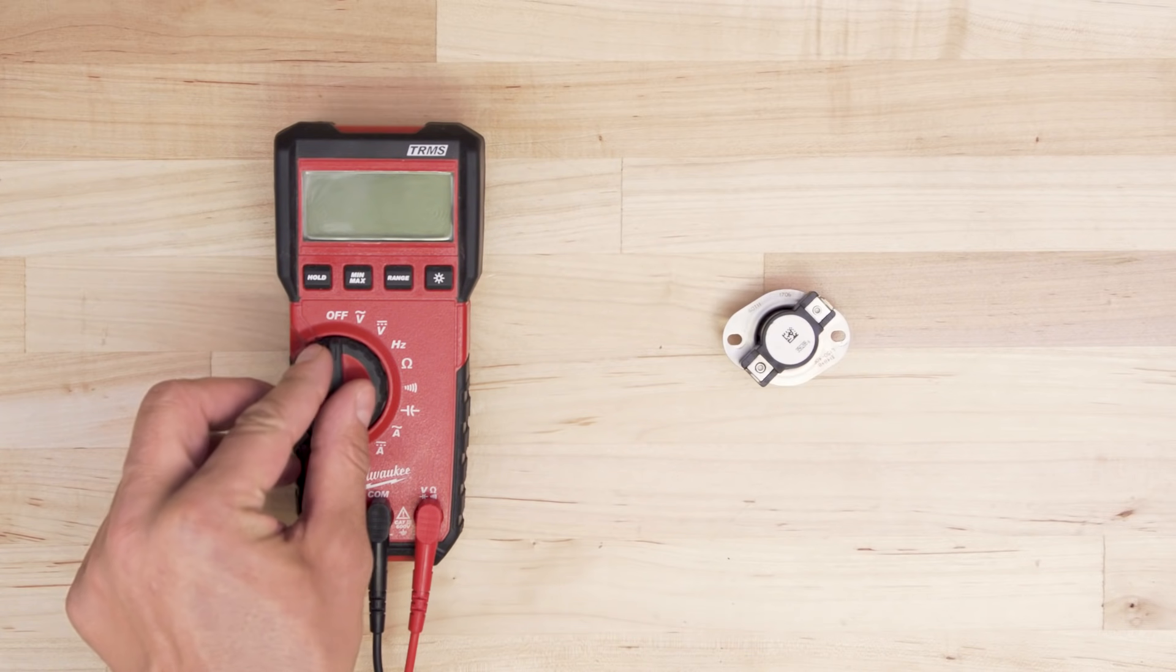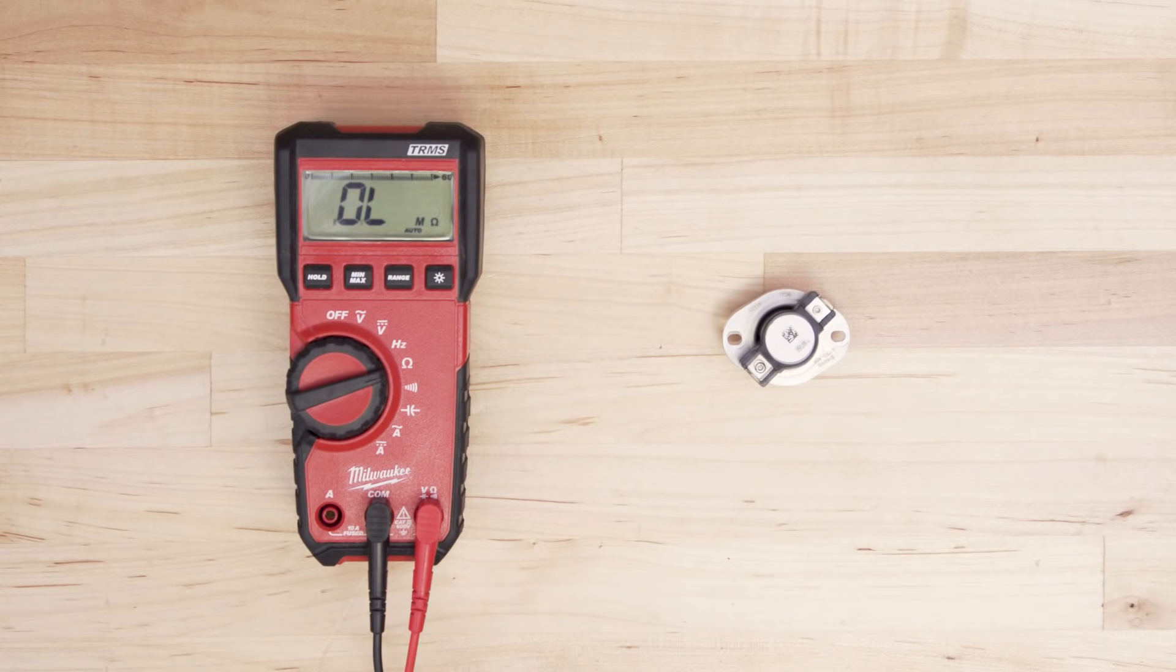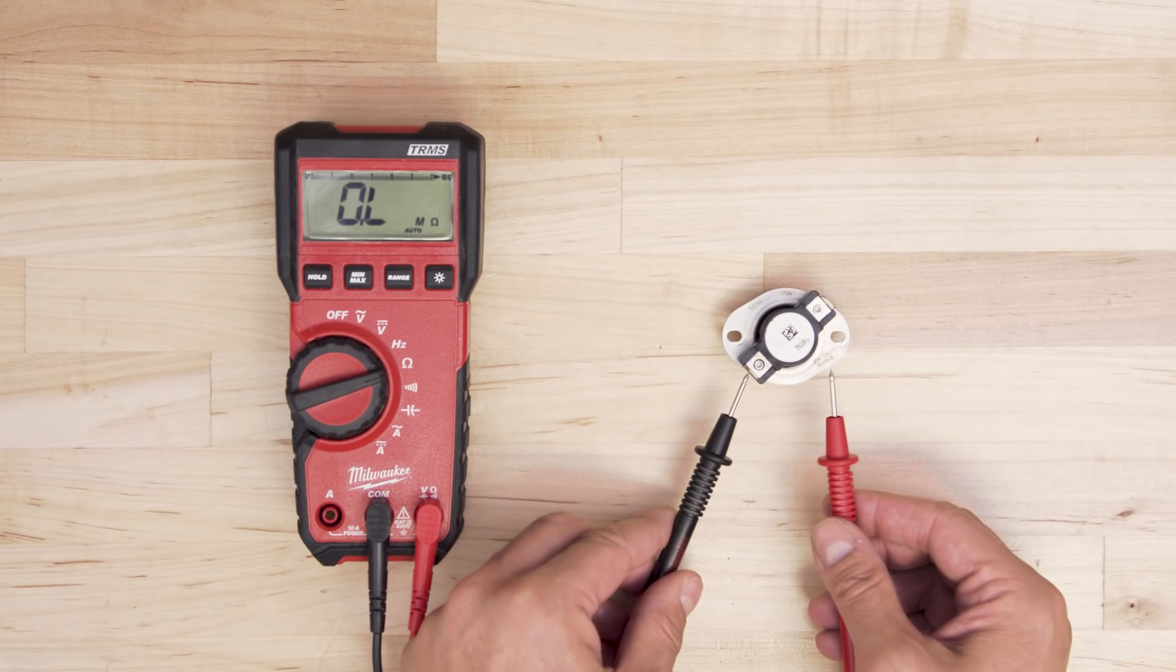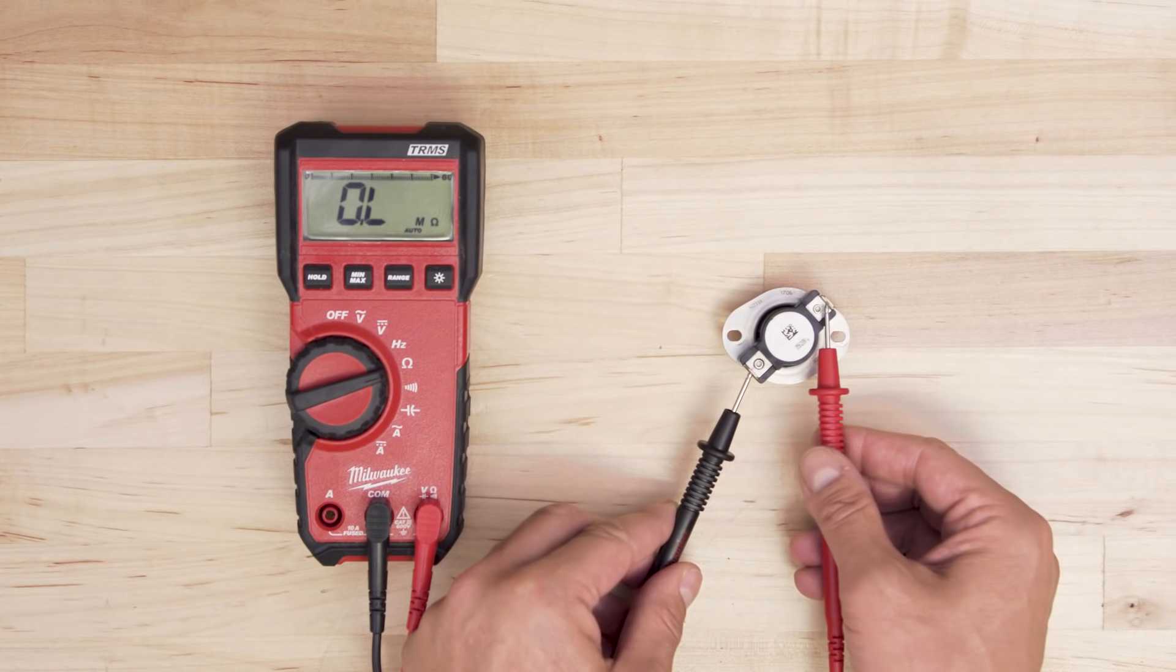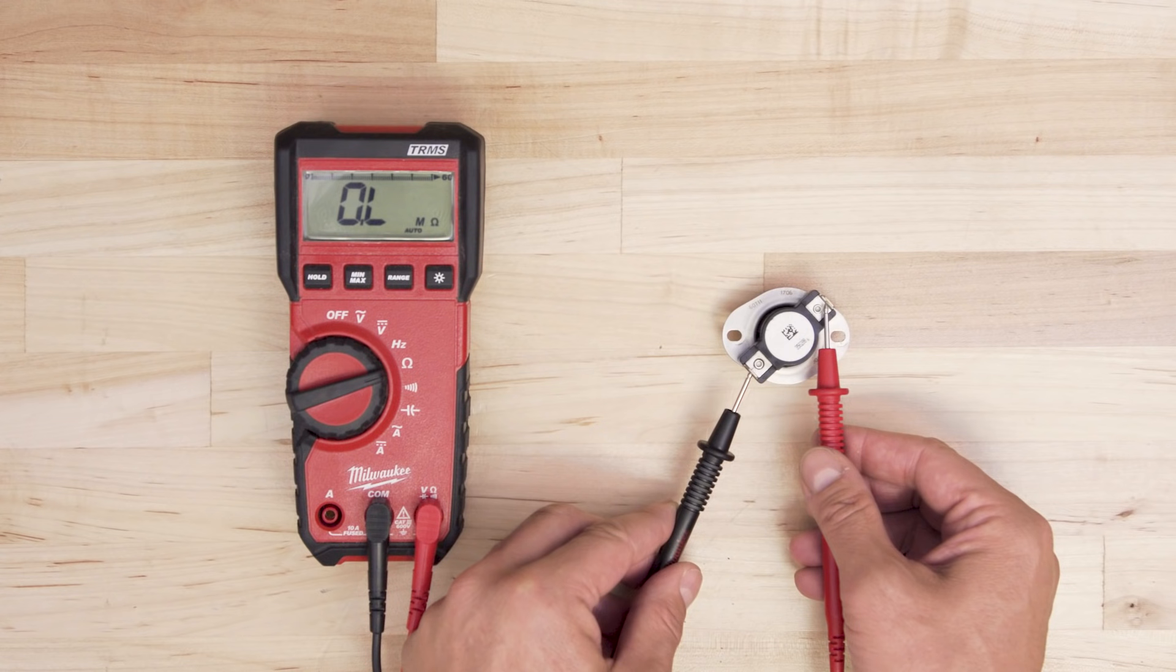Take the multimeter and set it to the lowest ohms of resistance. Now touch the probes to each terminal. If the switch has continuity then the multimeter will show zero ohms. If the switch is open or faulty then the multimeter will show infinite resistance. If there is no continuity then replace the limit switch.